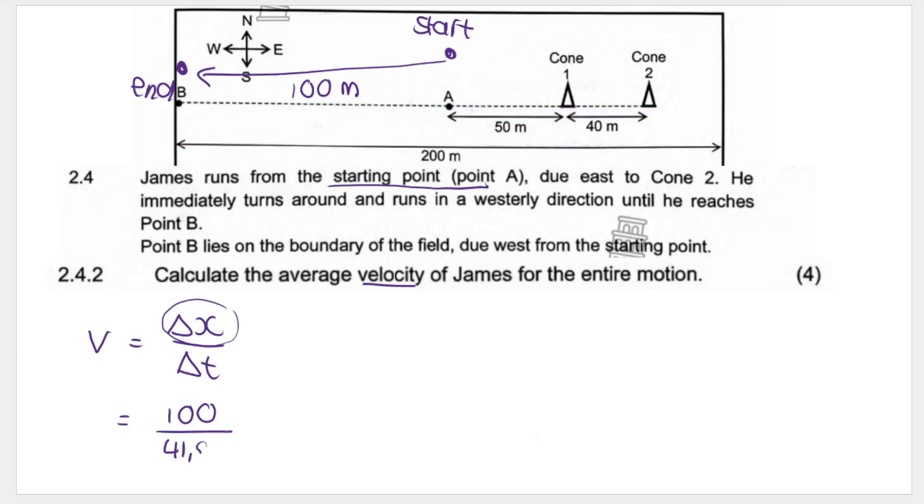And the time that James took, we just worked out, 41.98 seconds. So we sub in 41.98. And we get 2.38 meters per second. Remember your unit, meters per second, it's velocity. And you have to give me a direction. It's from where you start, pointing towards where you ended. You are pointing towards the west. So you have to give me a direction.